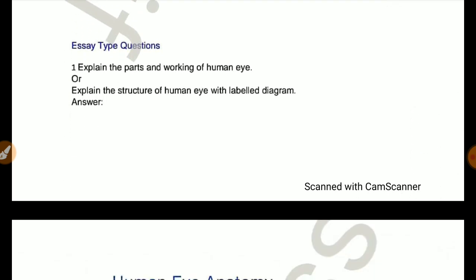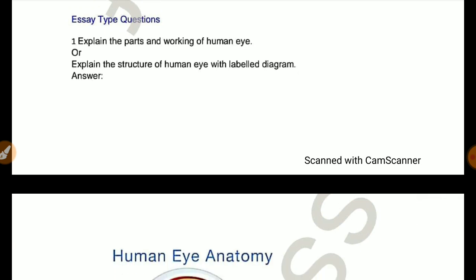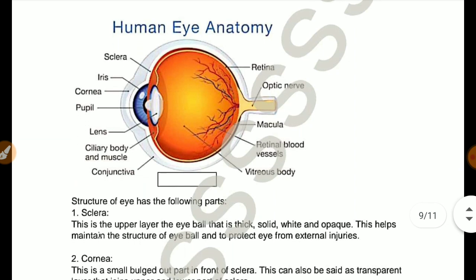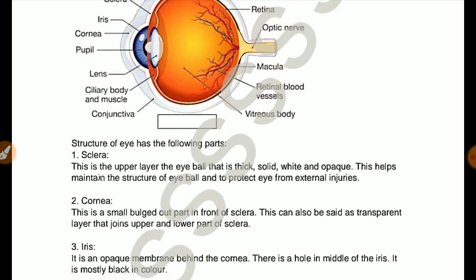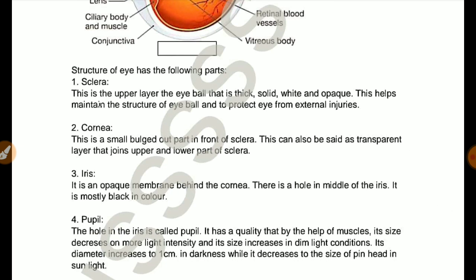Essay type questions. Explain the parts and working of human eye, or explain the structure of human eye with label diagram. Structure of eye has following parts. Sclera: This is upper layer of the eyeball that is thick, solid, white and opaque. This helps maintain the structure of eyeball and protect eye from external injuries. Cornea: This is small bulge in front of sclera. This can also be said as transparent layer that joins upper and lower part of sclera.